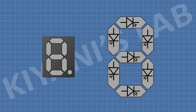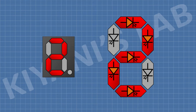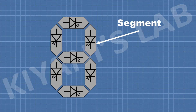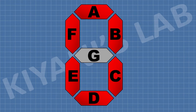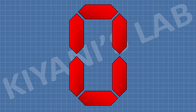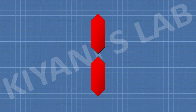A 7-segment display consists of 7 LEDs. By turning on these LEDs in different combinations, it displays different digits. Each LED in a 7-segment display is called a segment, and the segments are named A, B, C, D, E, F, and G. By turning on segments A, B, C, D, E, and F it displays digit 0, and by turning on segments B and C it displays digit 1.